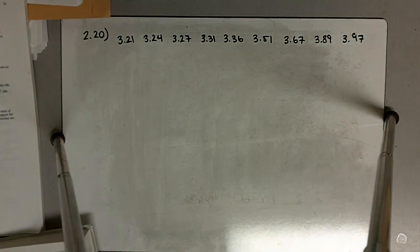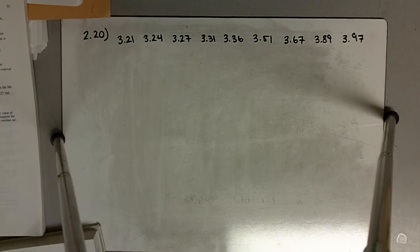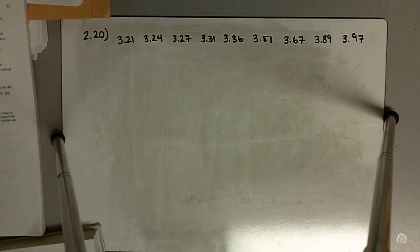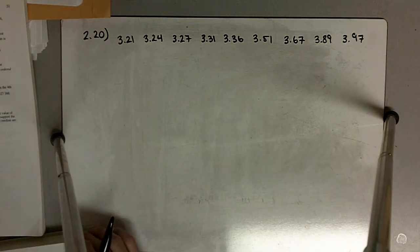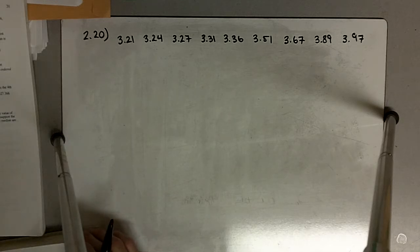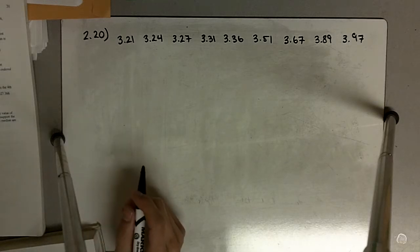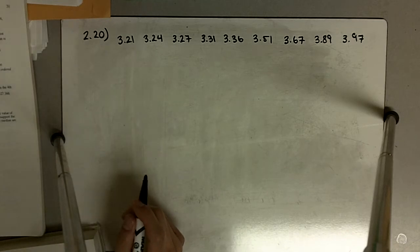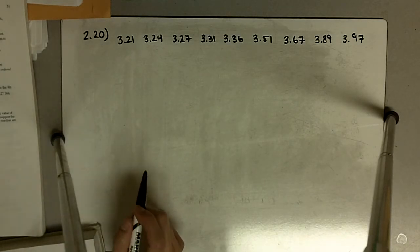Problem 220 says the weight gains of beef steers were measured over a 140-day test period. The average daily gains, in pounds per day, of nine steers on the same diet were listed, and it says determine the mean and median.